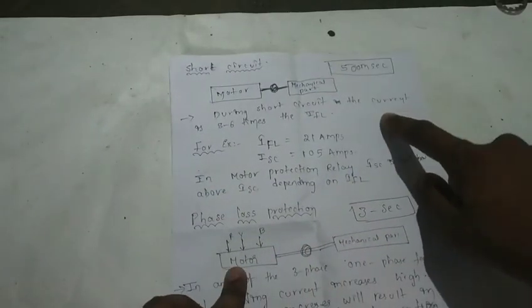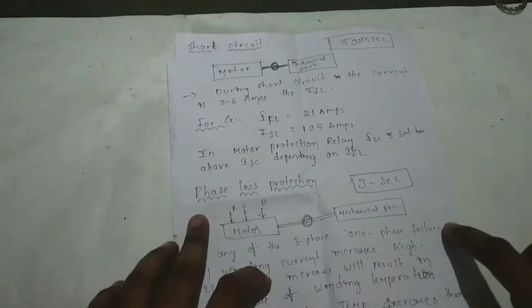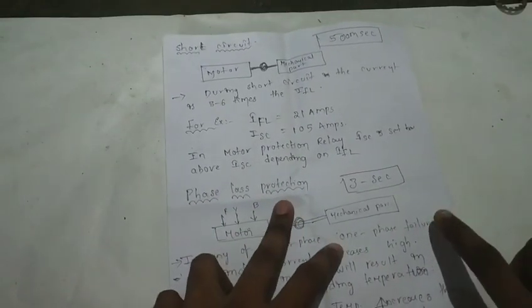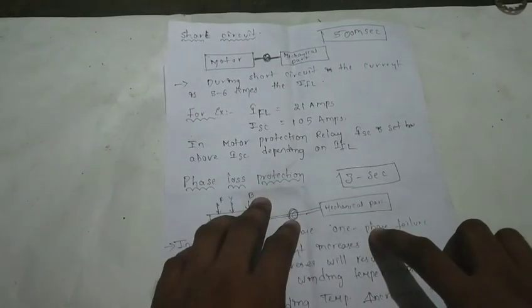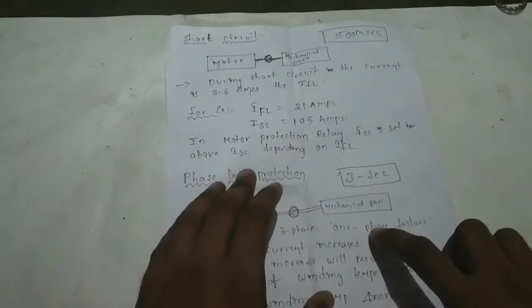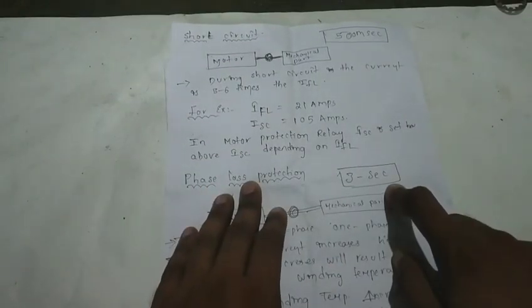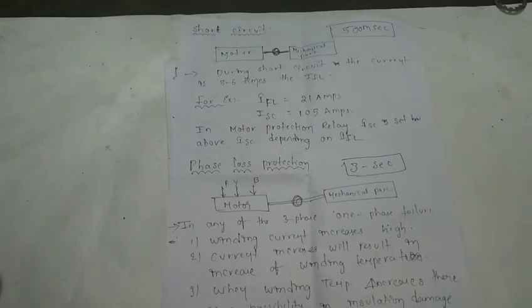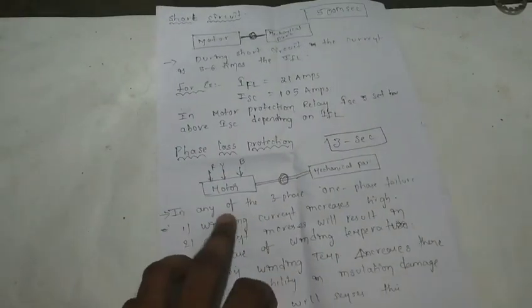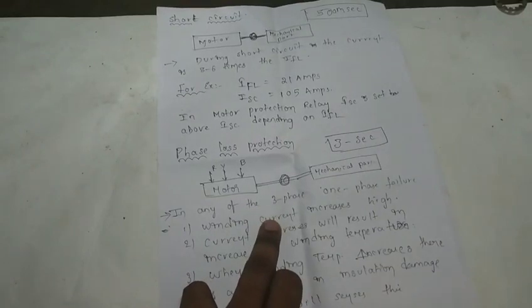We can trip the motor and the relay will act. Next, what is phase loss protection? Suppose you have a motor running in three-phase mode. Sometimes, while the motor is running, we need to monitor the current. While we are loading current from the motor, the current is going down when a phase is lost.